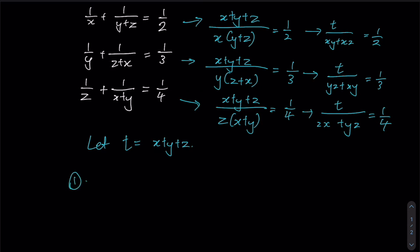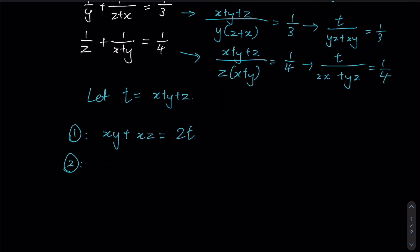For equation 1 we have xy plus xz equals 2t. For equation 2 we have xy plus yz equals 3t. And for equation 3 we have yz plus zx equals 4t.